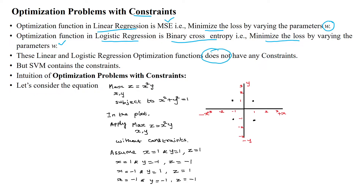Linear and logistic regression optimization functions do not have any constraints, but SVM has a constraint. That constraint is: y_i multiplied by the hypothesis of the i-th sample should be greater than or equal to one. This is the constraint in SVM, and the intuition behind optimization problems with constraints is explained next.